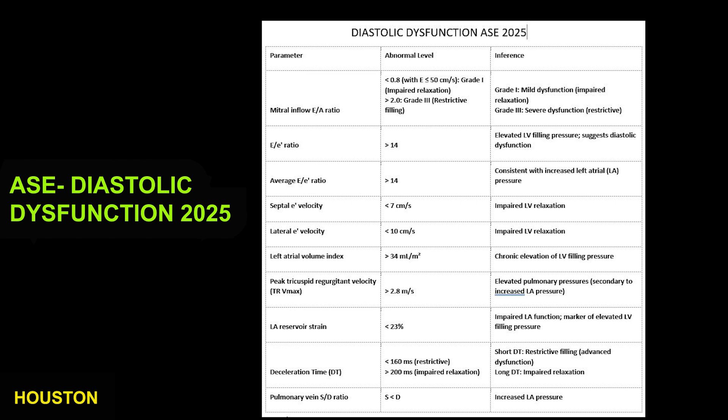E to E prime ratio greater than 14 suggests elevated left atrial filling pressure and diastolic dysfunction. The average E to E prime ratio greater than 14 is consistent with increased left atrial pressure.